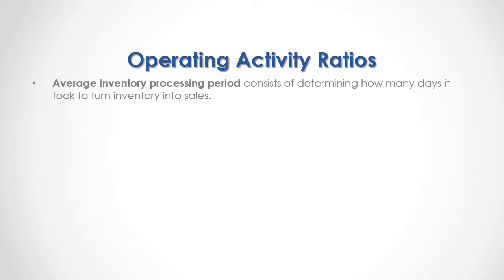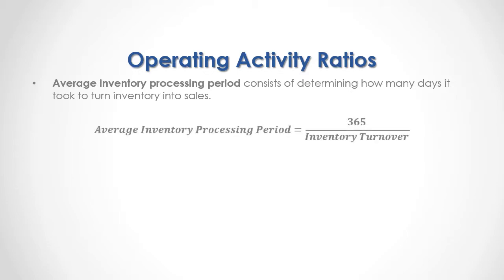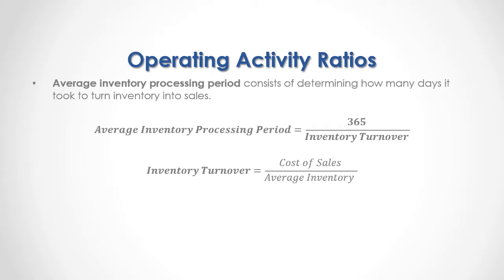Average inventory processing period consists of determining how many days it took to turn inventory into sales. As a formula, the average inventory processing period is equal to 365 days divided by the inventory turnover. Inventory turnover is equal to the cost of sales divided by the average inventory.